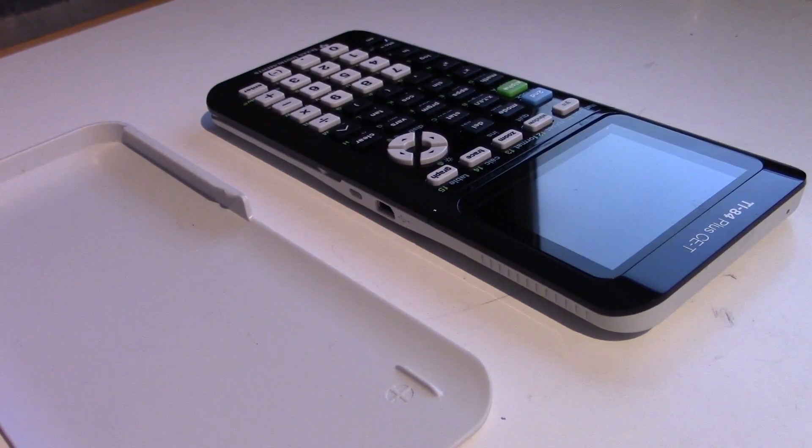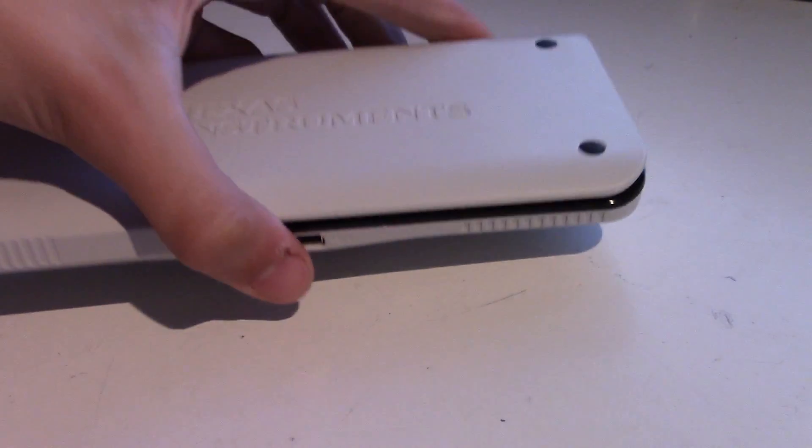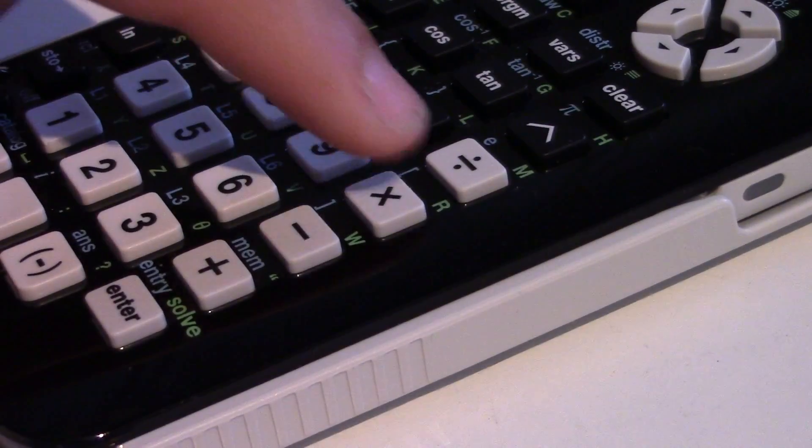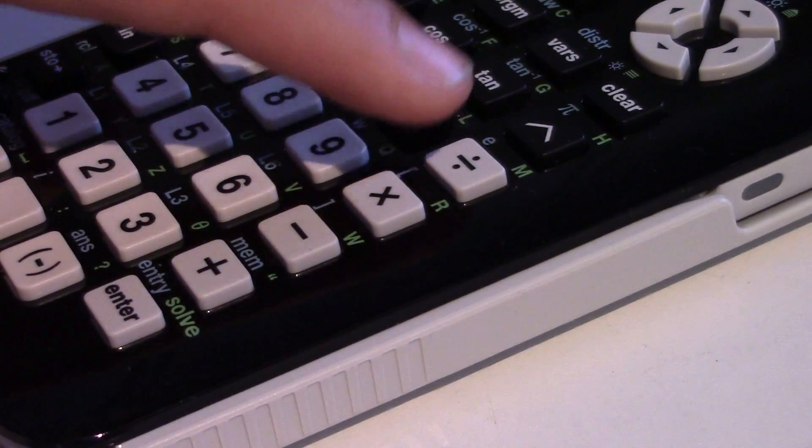The calculator also comes with a plastic cover that you can put onto the back of the calculator, or onto the front of the calculator to protect it from the elements. And what is really nice as well is that both the cover and the calculator have rubber feet on them to prevent the calculator from sliding across the table when you are typing something, which is a feature that I really appreciate.